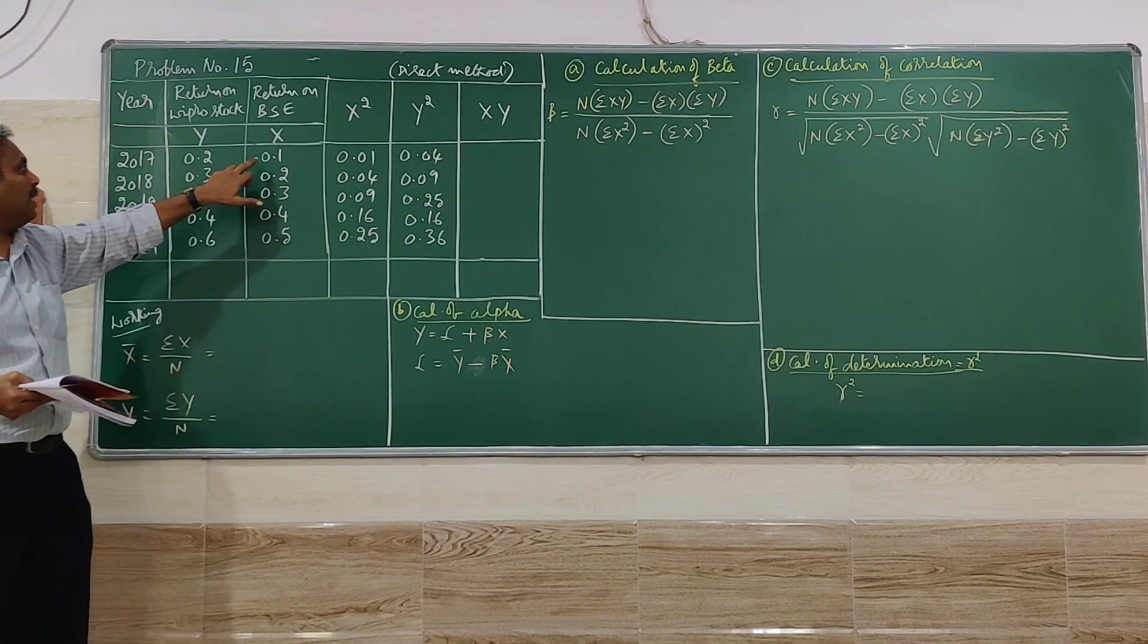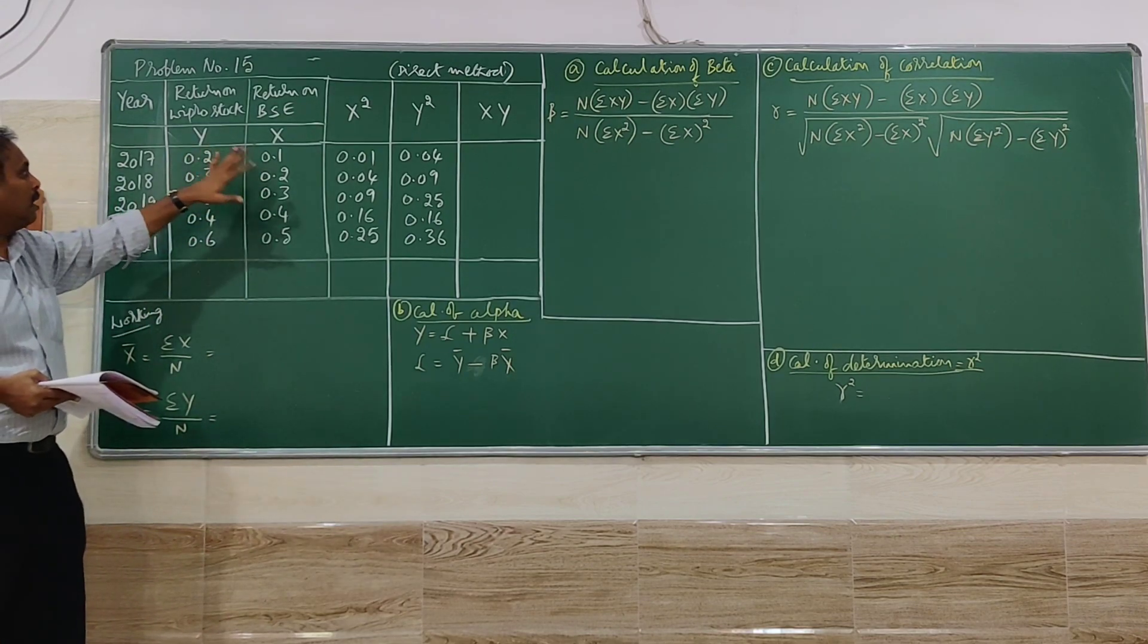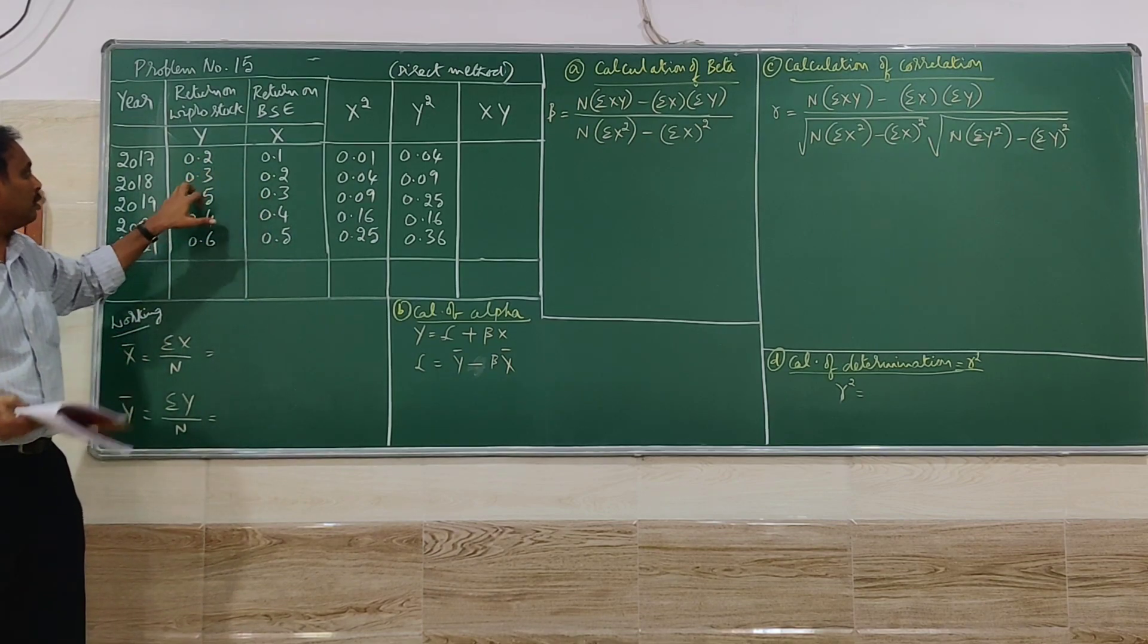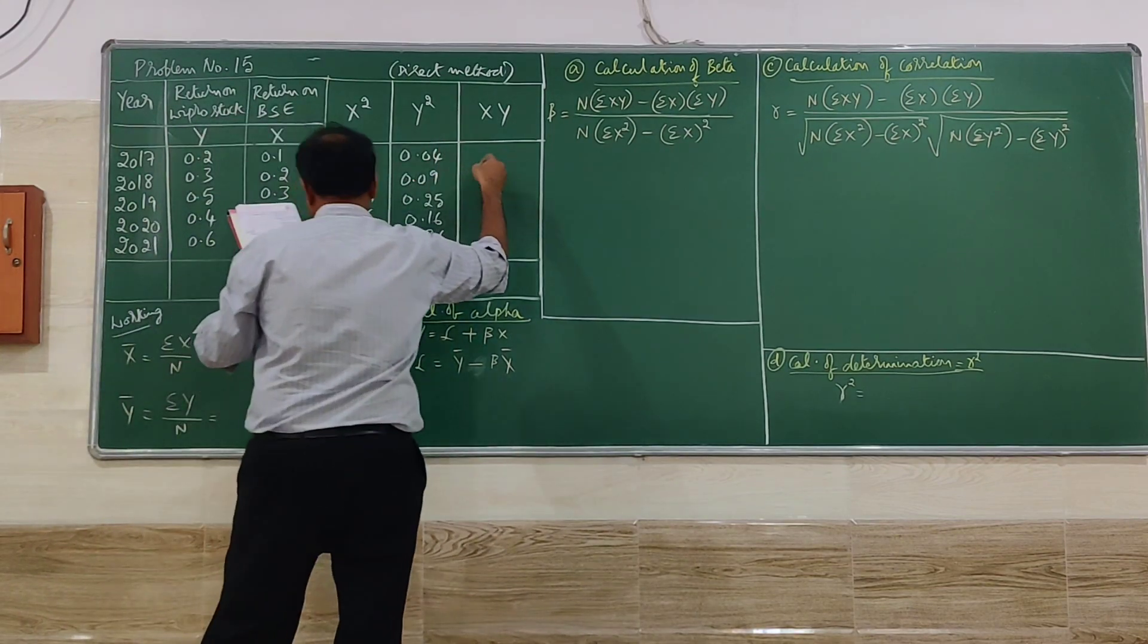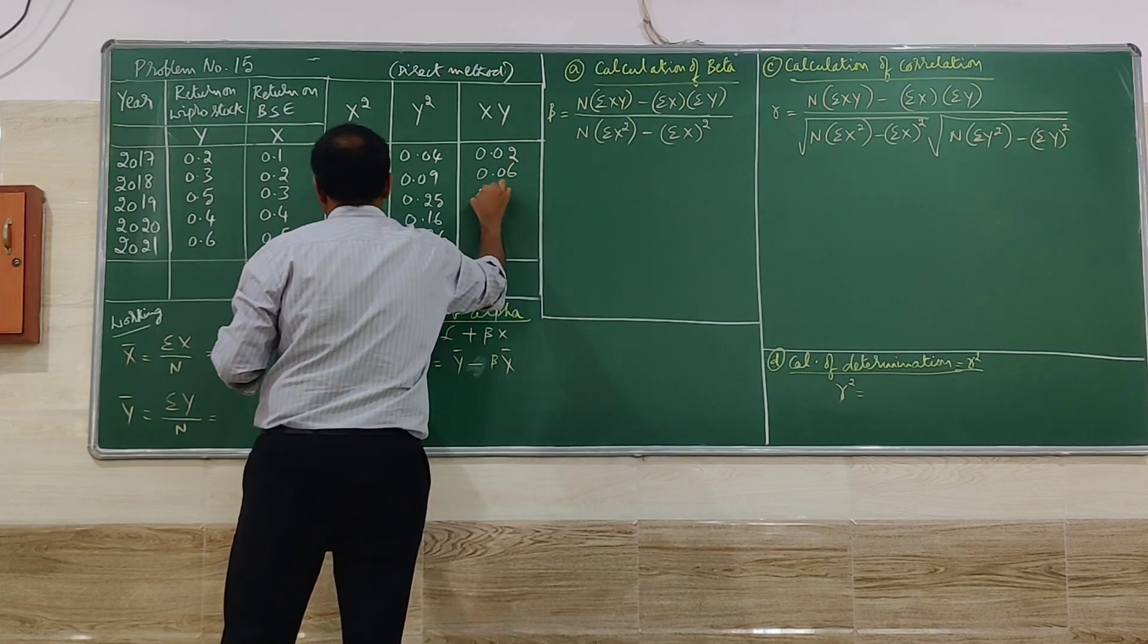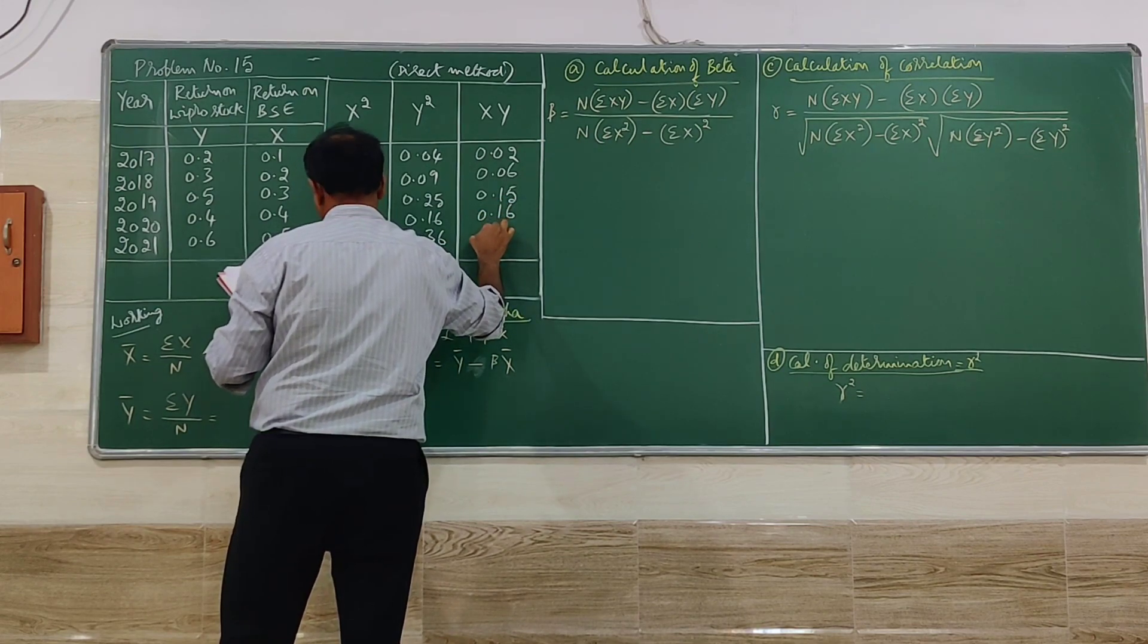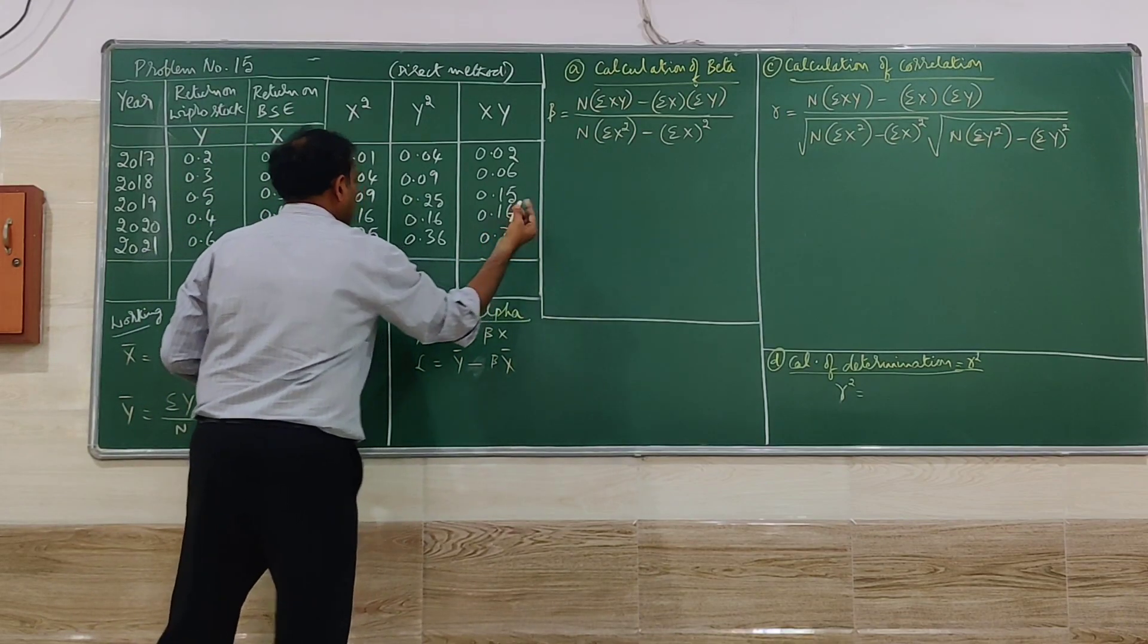Then we have to go for multiplying X into Y or Y into X. That is not a problem. However you want we can do. So 0.1 into 0.2, 0.2 into 0.3. 0.02, 0.06, 0.15, 0.16, 0.3. Then we have to go for totaling all the columns.